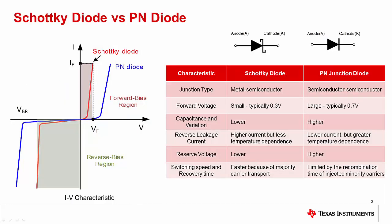This slide compares and contrasts the Schottky diode and the PN diode. For input protection, the Schottky diode is typically used because of its low forward voltage. The forward drop of a Schottky diode is typically 0.3 volts, whereas the forward drop for a PN junction diode is typically 0.7 volts. One benefit of a PN junction diode is that they tend to have lower reverse leakage current. However, be careful, as the PN diode leakage current has a stronger dependency on temperature compared to a Schottky diode. When selecting your diode, make sure to consider the whole temperature range and not only the room temperature leakage specification.